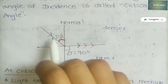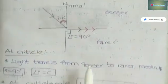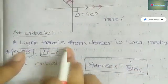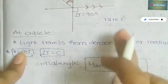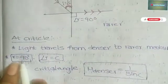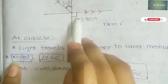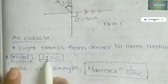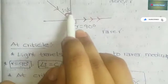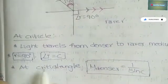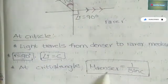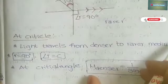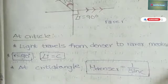At critical angle, light travels from denser medium to rarer medium and the angle of refraction is 90 degrees. The angle of incidence is the critical angle. At critical angle, the refractive index of denser medium: μ dense = 1 / sin C. This is the formula for the critical angle.